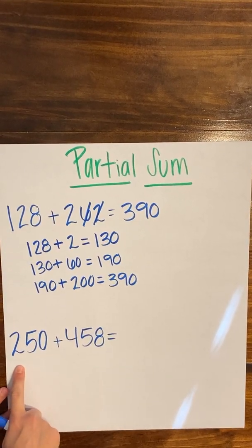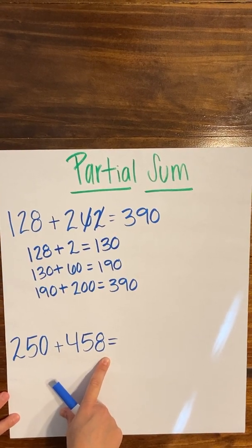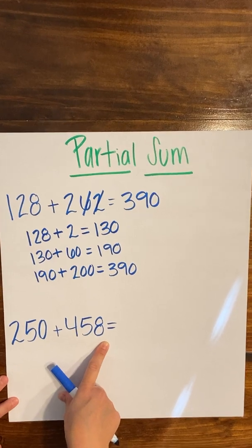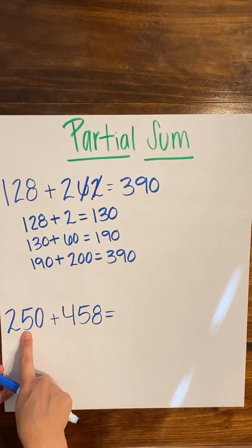So let's move down to our next example, which is 250 plus 458. So looking at this, the reason that I would choose partial sum as the strategy to solve this problem is because I know that this five in the tens place, so this 50 plus this five in the tens place, the second 50,